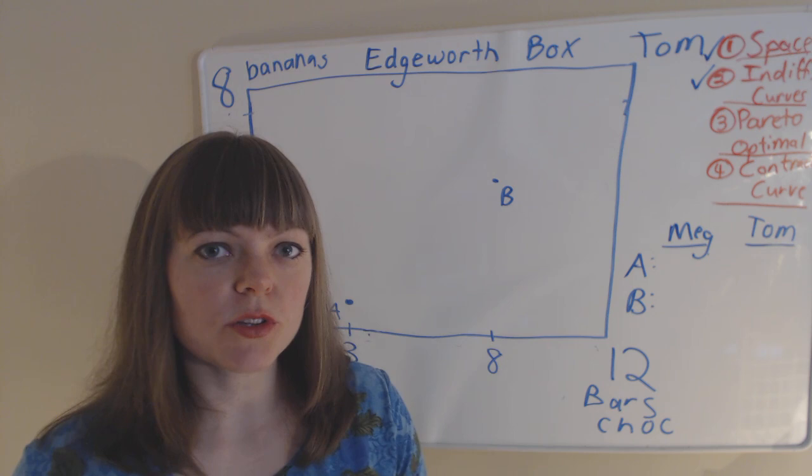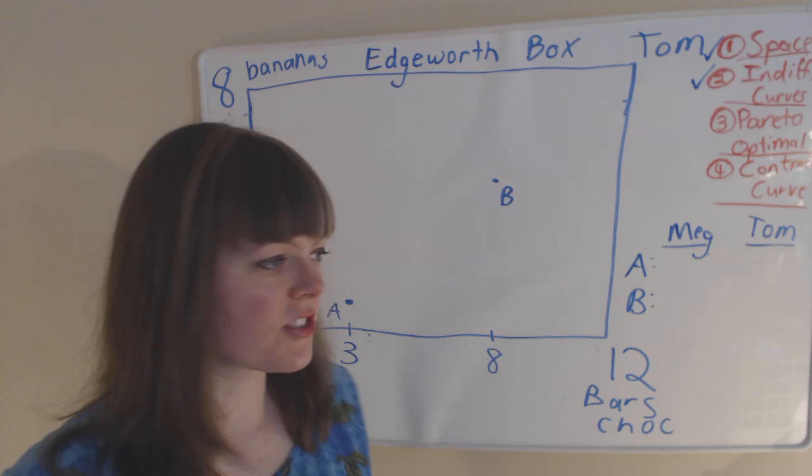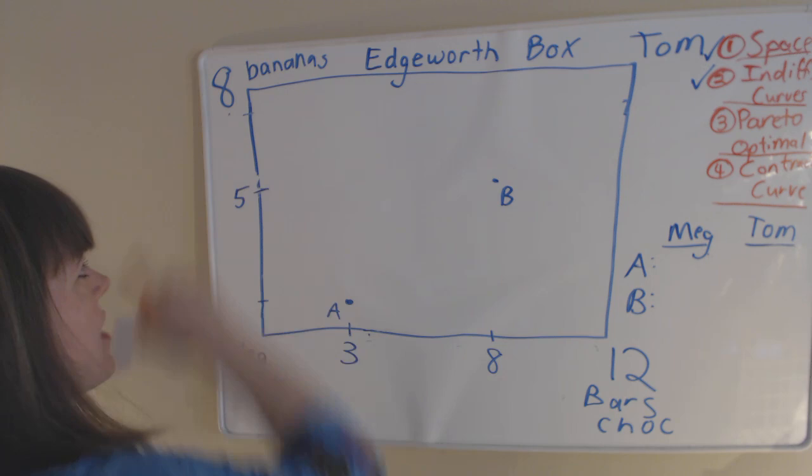I'm going over Edgeworth boxes in this video, and in this world we have two people, Meg and Tom, and we have two goods. That's bars of chocolate, and there's 12 bars of chocolate in this world, and bananas. And we have eight bananas in this world.